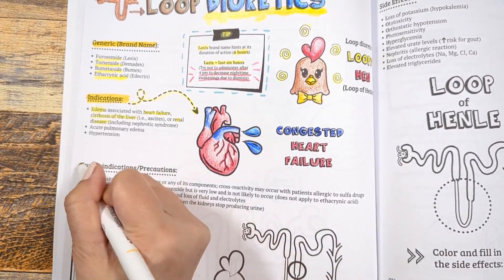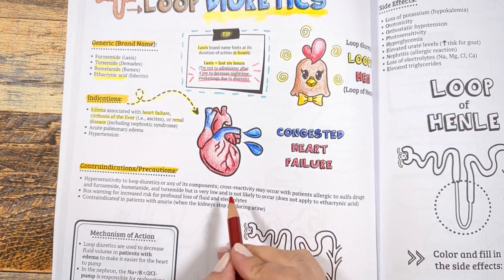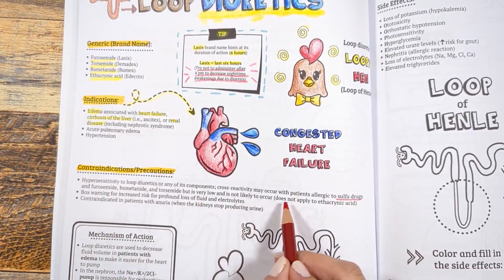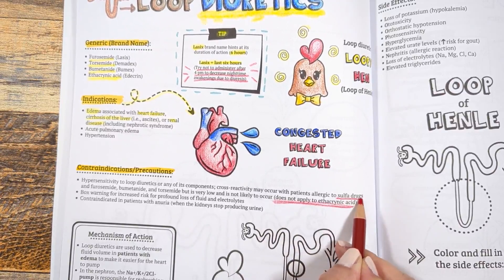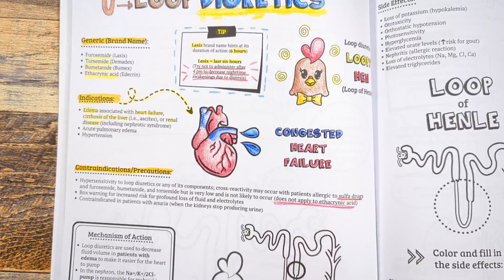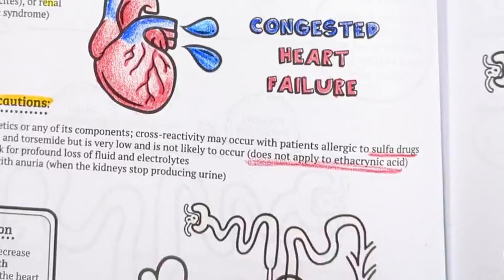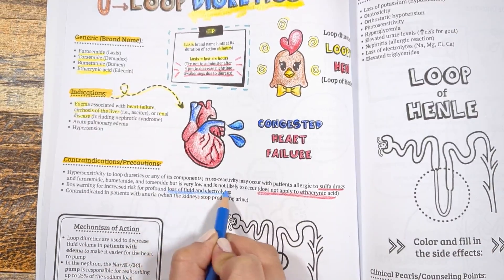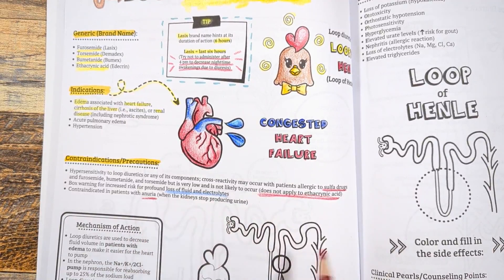Some contraindications to keep in mind: loop diuretics like furosemide, bumetanide, and torsemide are sulfonamide derivatives. Can we use them in patients with sulfonamide allergies? Since the sulfa moiety with sulfa-based diuretics is slightly different than sulfonamide antibiotics, cross-reactivity is very low and not likely to occur. The American College of Allergy states there is no evidence to suggest allergic cross-reactivity between sulfonamide antibiotics and non-antibiotic sulfonamides. The exception is ethacrynic acid, as it is the only loop diuretic that doesn't contain a sulfonamide substituent. Also, this class is contraindicated in patients with anuria, or when the kidneys are not producing urine, as these medications will not work.